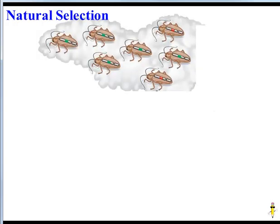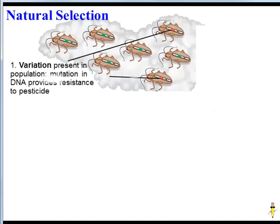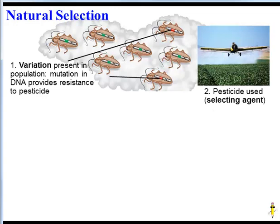Let's combine all of these ideas and finally explain what natural selection is, using another population of insects. These insects may look alike on the outside, but inside their DNA is a little bit different. In particular, two of these insects have a mutation that gives them resistance to pesticide — a poison that farmers sometimes use on their crops to kill insects. Right now, there's no pesticide around, so one trait isn't particularly better than another. But let's say the farmer decides to spray the crops with pesticide — all of a sudden, this mutation becomes an adaptation, because the pesticide is acting as a selecting agent, making this trait helpful.